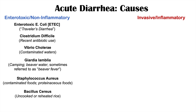Most causes of enterotoxic acute diarrhea are bacteria, with Giardia lamblia as a protozoal exception. There are also viruses that can cause enterotoxic acute diarrhea, including norovirus, rotavirus, and cytomegalovirus (CMV).